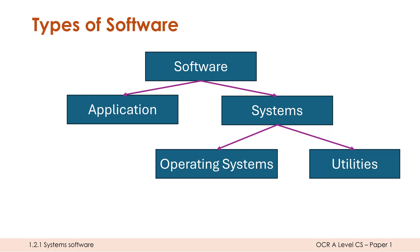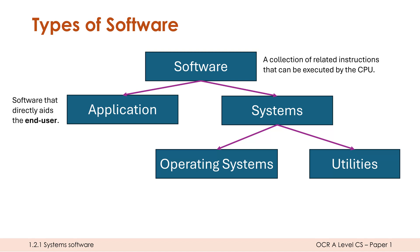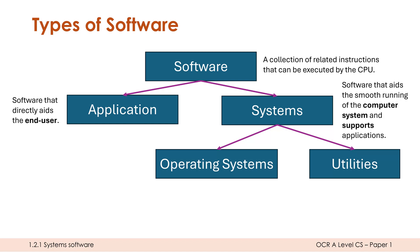For now, this is the setup and the different categories I want you to have in your head. Software itself is just a collection of related instructions that can be executed by the CPU. Applications are programs — software that directly aids the end user, designed to help you as a person. We're talking about things like word processing, spreadsheet software, and image editing software — things which, in theory, you don't need a computer to do. Whereas system software are programs which rely on there being a computer; they aid the smooth running of your computer system and support the running of applications, benefiting the end user, just arguably not directly.